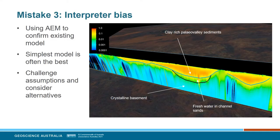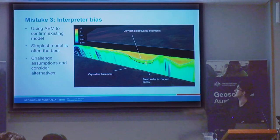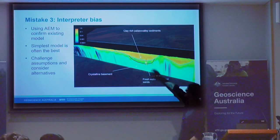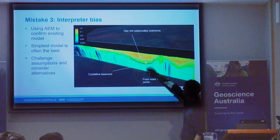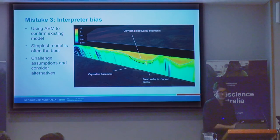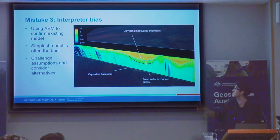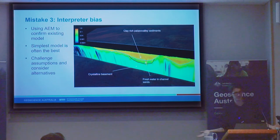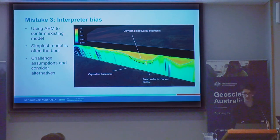Mistake number three, and this is something we all do to some degree, is interpretive bias. We can only hold so many mental models in our heads, and generally what people do is try to confirm their existing model with the data. In this example, they've called features 'clay-rich Pallia Valley sediment' and 'fresh water' because they might expect that based on a report or a different Pallia Valley drill. But you really have to be aware of this bias, challenge your own assumptions, and consider all the alternatives. Simpler models are generally best.